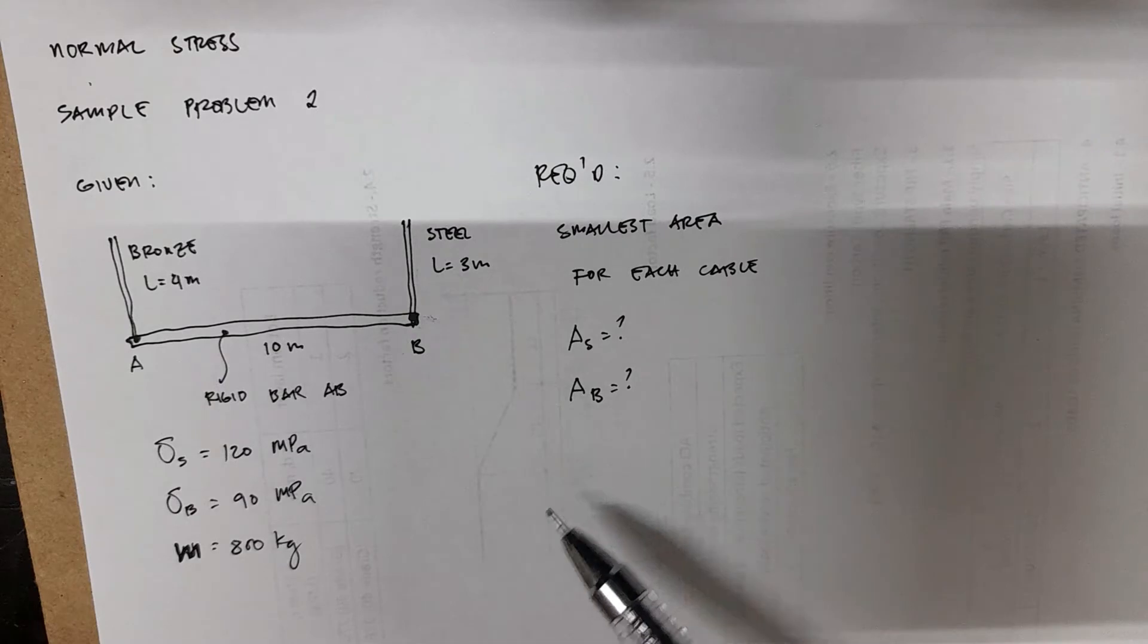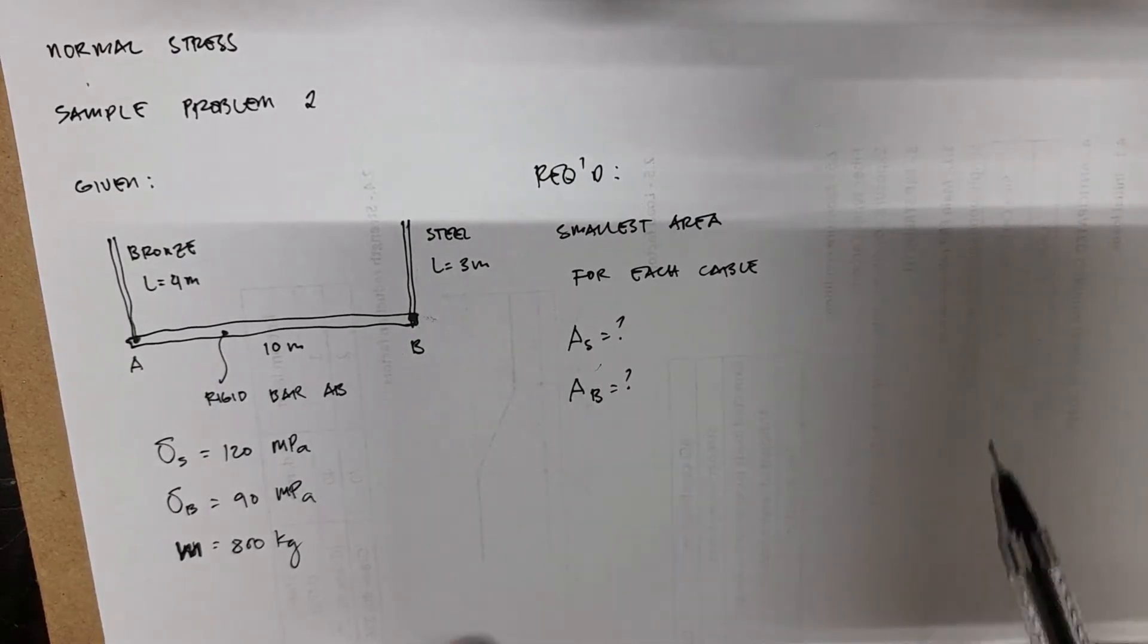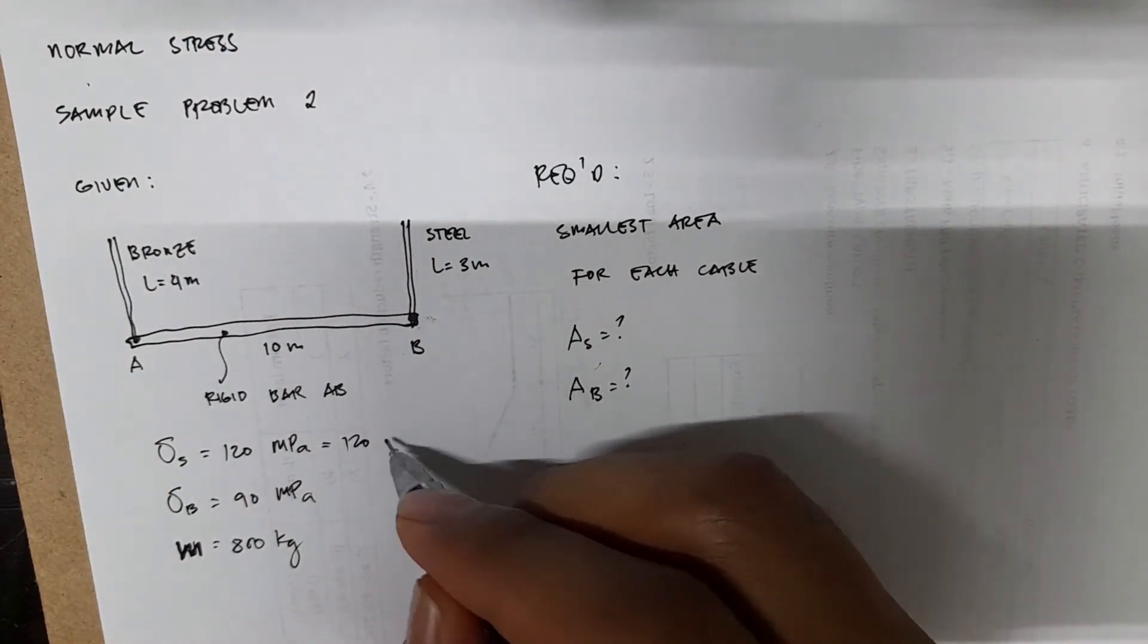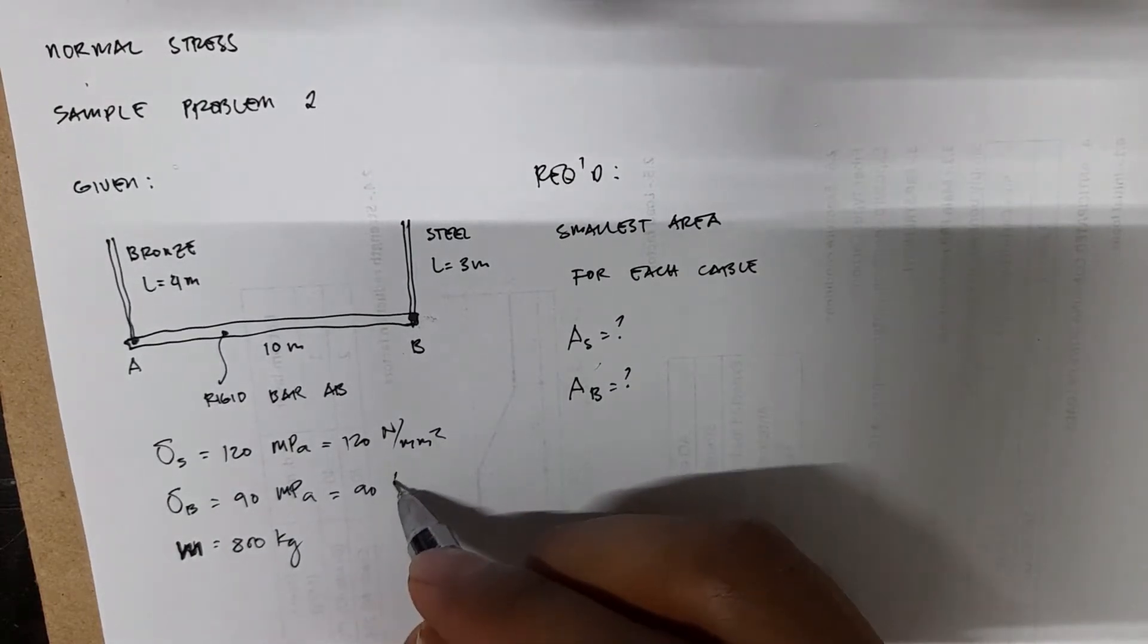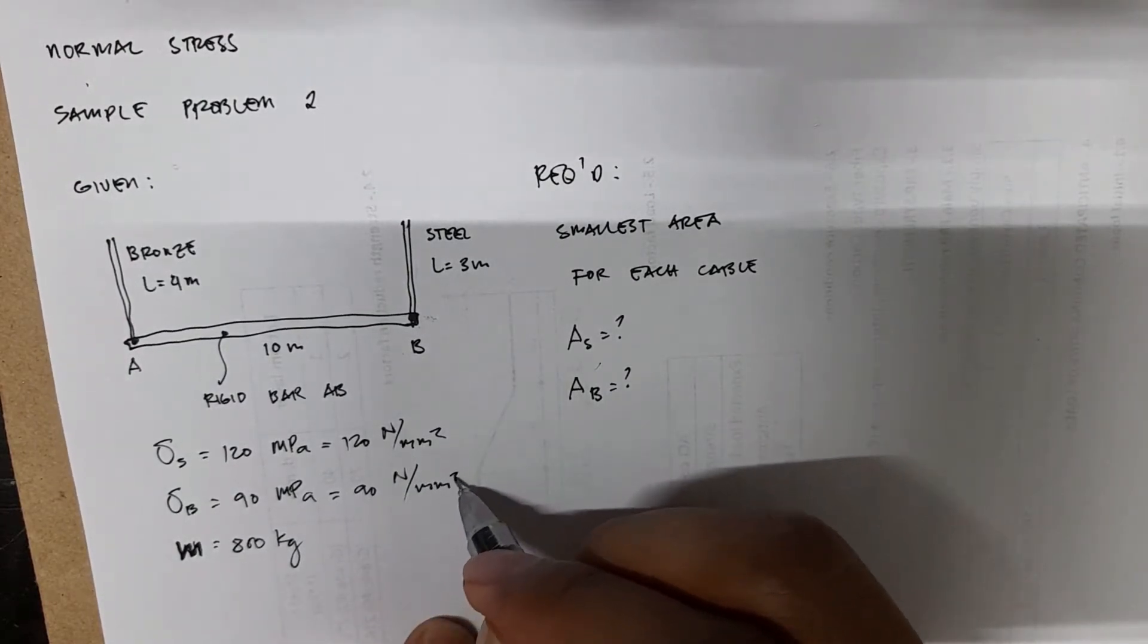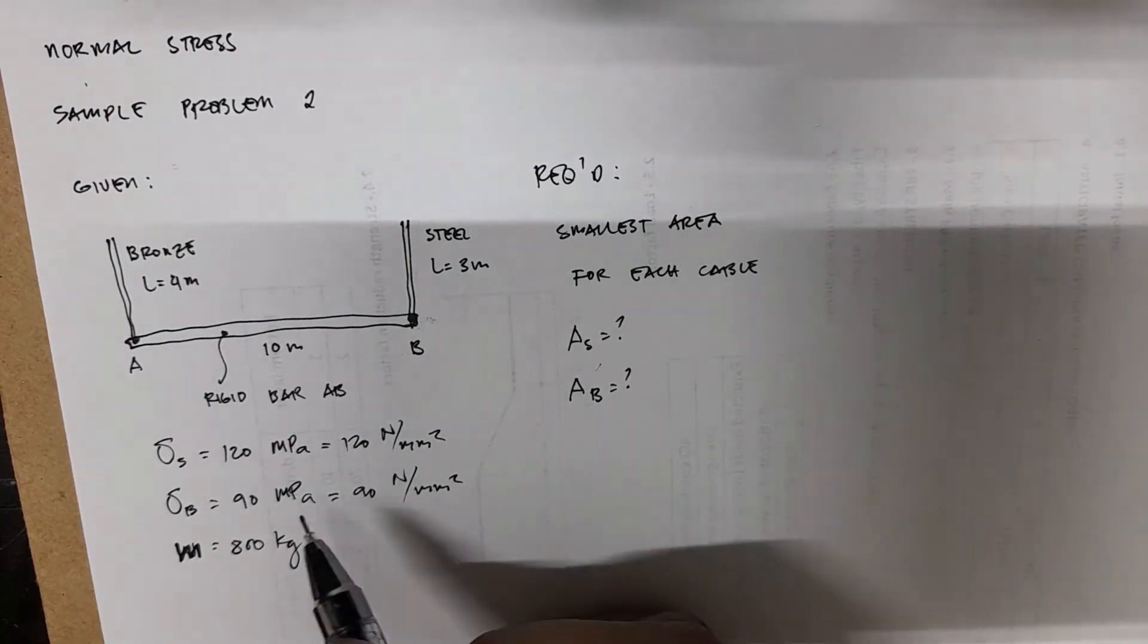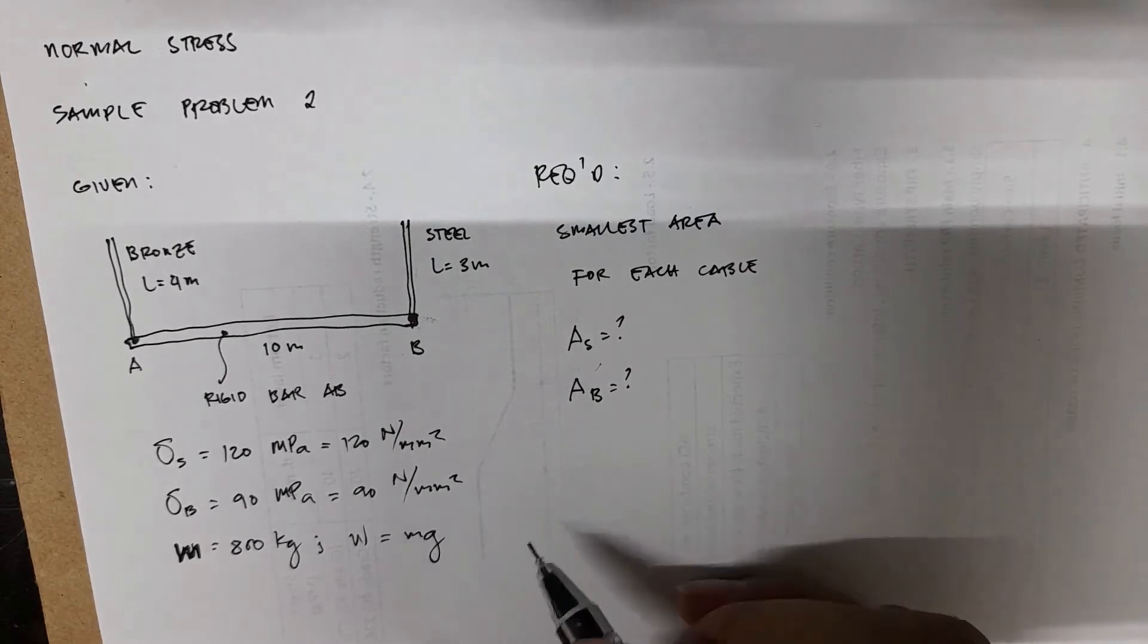Before we start computing for the required values, we just have to simplify this one. So this can be equal to newton per square millimeters. This one is 90 newton per square millimeters. And since this is given as mass, and we're dealing with forces, we have to translate this into weight. Weight is just mass times acceleration due to gravity.